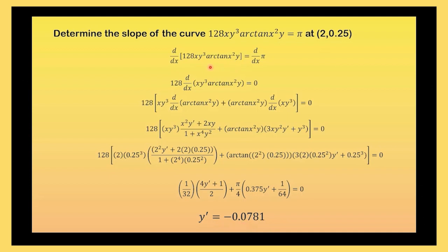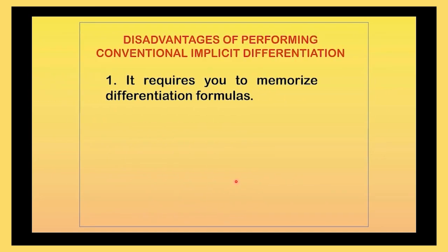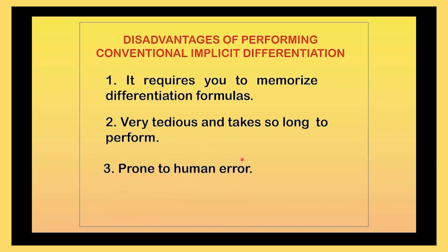The function is written implicitly. I will do this thing, right? It is a very difficult task. Sir, do you recommend this solution always? Basically not because of those things. It has a lot of disadvantages. Number one, it requires you to memorize differentiation formulas. Good luck if you can. Number two, it's very tedious and takes so long to perform. And number three, it's prone to human error. Because, of course, the more detailed the solution is, the more it is prone to human error. That's why it's very inefficient.